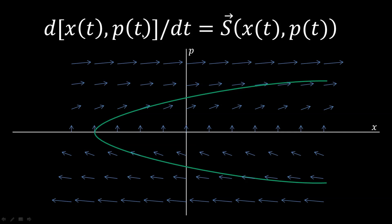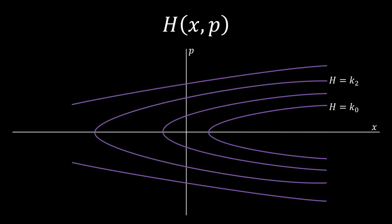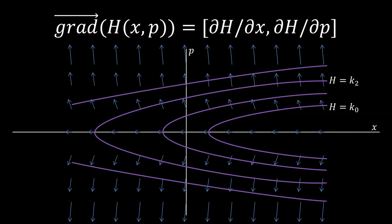Now we understand s and its relationship with the trajectory. We have to understand the relationship between s and h. h is just a scalar field — given a point in phase space, h gives us a value. What we are drawing here are the lines of equal h, or contour lines. For example, all points on this line have h equal to k0, here k1, here k2, and so on. The first thing we want to do with h is take the gradient, which gives us a vector field that tells us where h is increasing. This vector field is always perpendicular to the contour lines, because the component of the gradient along the contour line must be zero — on the contour line, h is constant.